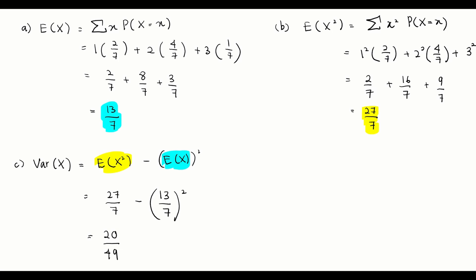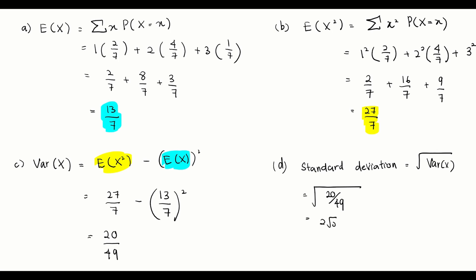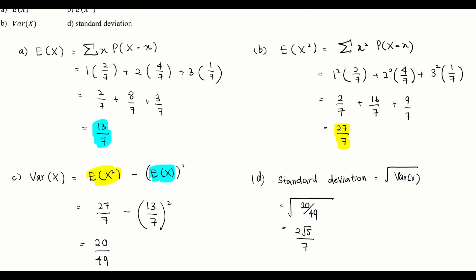For part (d), we find the standard deviation, which is the square root of the variance. We know the variance of X is 20/49, so the standard deviation is the square root of 20/49. We can simplify this to 2√5 over 7. That's how we calculate E(X), E(X²), the variance of X, and the standard deviation.